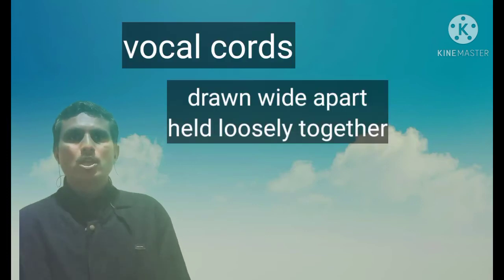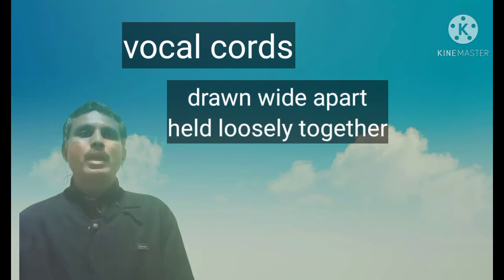Let us first see the classification according to the position of the vocal cords. While learning organs of speech, we have seen that vocal cords are closed at one end and open at the other end, so they are capable of assuming many positions. While describing consonants according to the position of vocal cords, we have two important positions: vocal cords drawn wide apart, and vocal cords held loosely together.